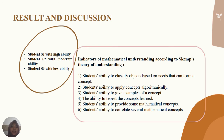The indicators of mathematical understanding according to Skemp's theory used in this research are: student ability to classify objects based on needs that define a concept, student ability to apply concepts algorithmically, student ability to give examples of a concept, the ability to restate the concept learned, student ability to present a mathematical concept, and student ability to connect several mathematical concepts.